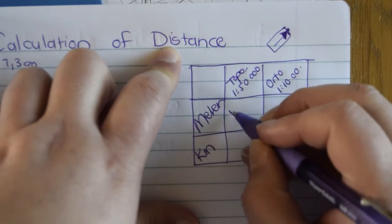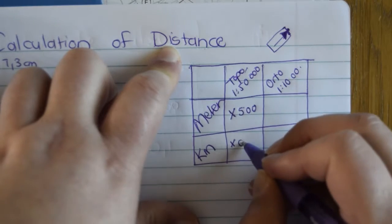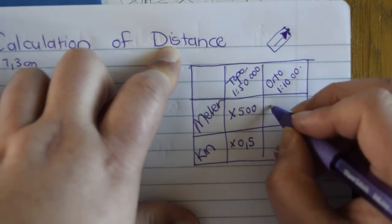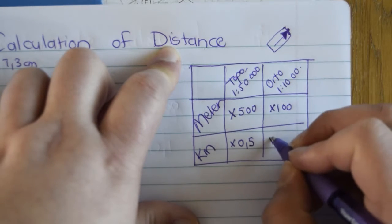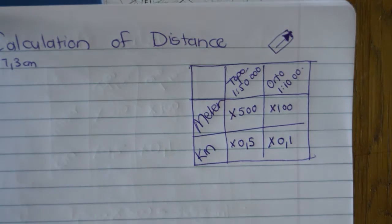With meters, you know, it will be multiplied by 500 and kilometers will be multiplied by 0.5. On the ortho photo, meters will be multiplied by 100 and your kilometers will be multiplied by 0.1. Okay.